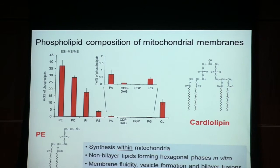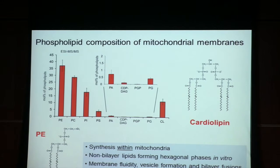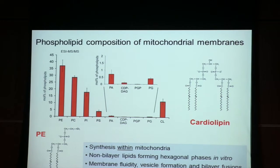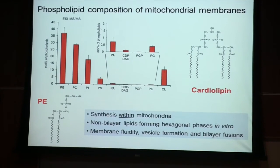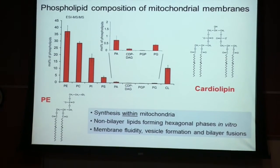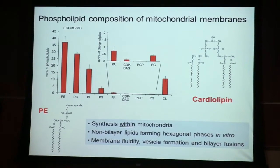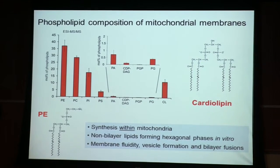Mitochondrial membranes are distinct from other eukaryotic membranes in that they have a phosphodiglycerophospholipid, cardiolipin. You can see here the structure. That is actually synthesized within mitochondria, and they share this with bacteria. So this is a typically bacterial-derived lipid, characteristic for mitochondrial membranes, in particular the mitochondrial inner membrane, but it also seems to be present in the mitochondrial outer membrane.